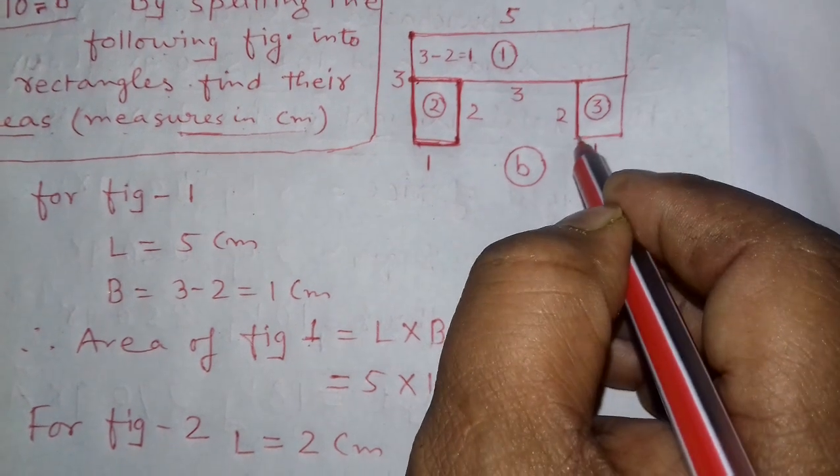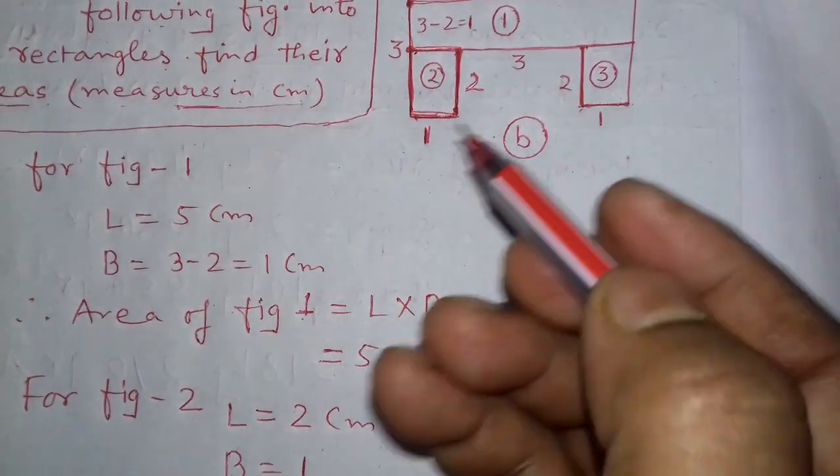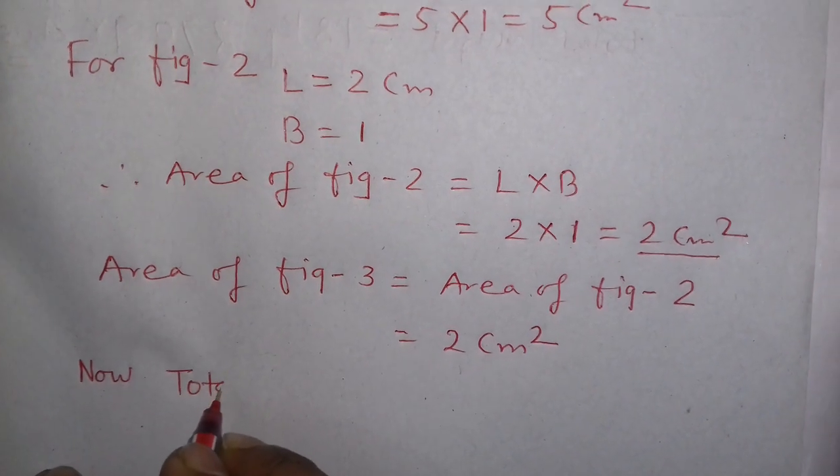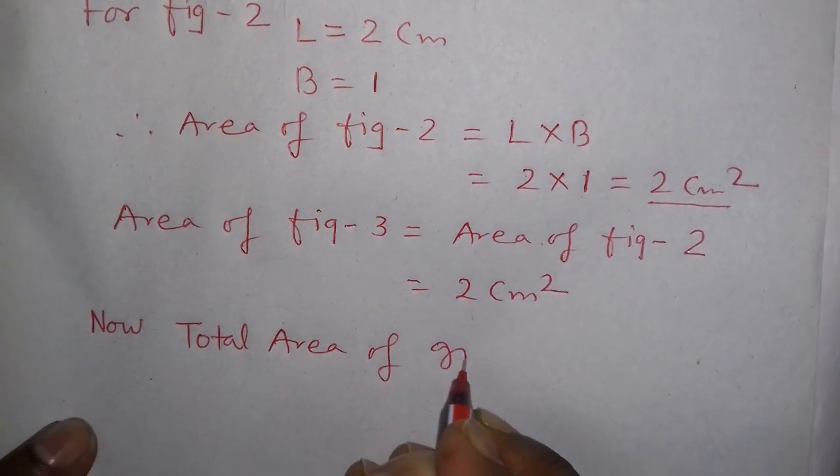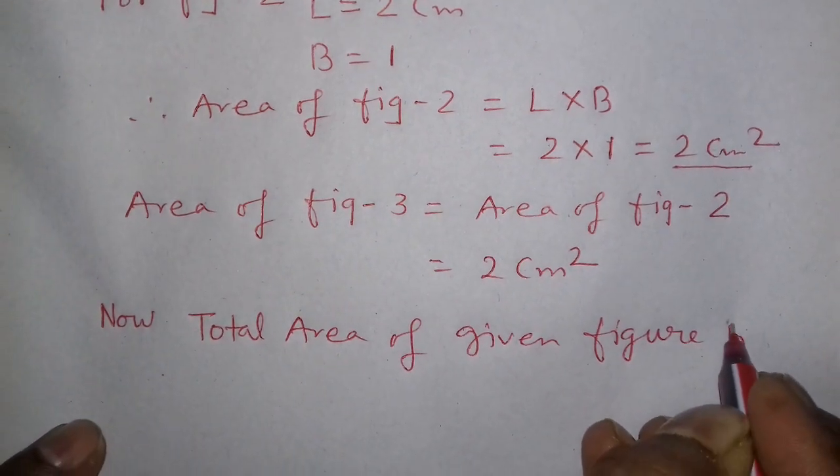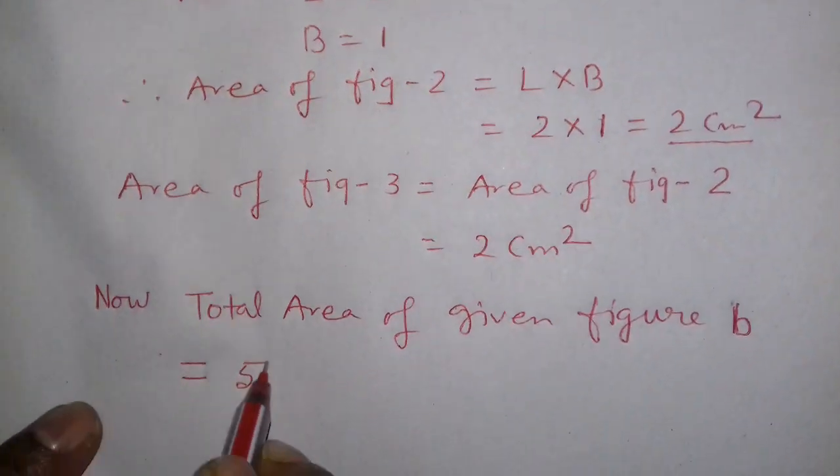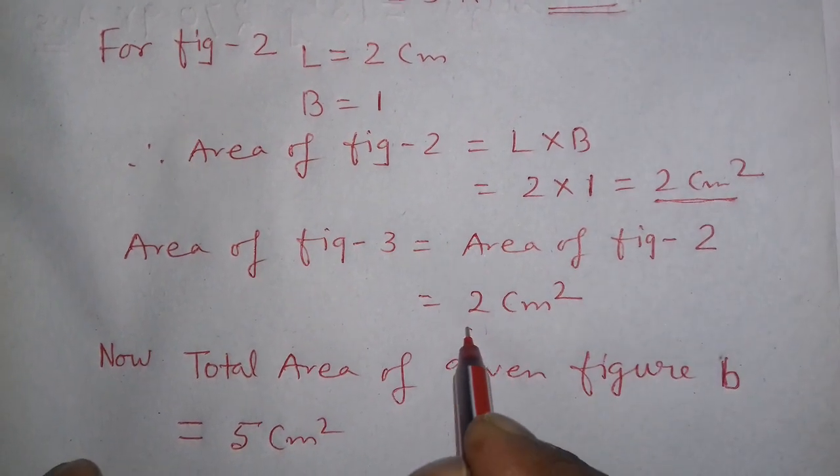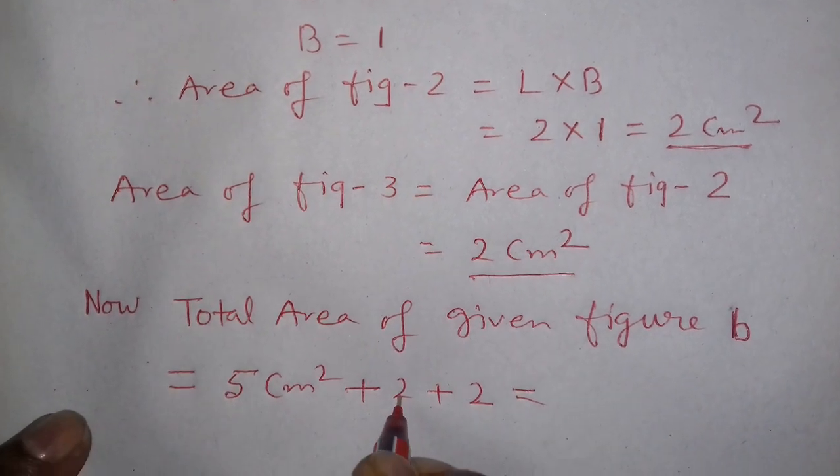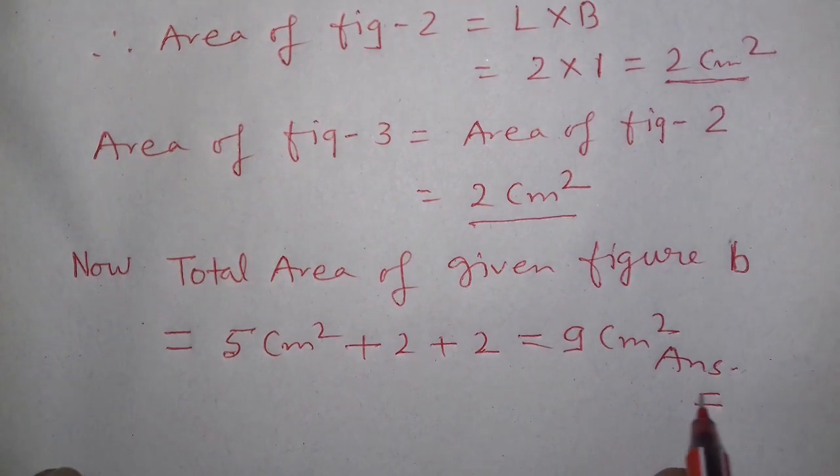So the areas are: Figure 1 equals 5 centimeter square, Figure 2 equals 2 centimeter square, Figure 3 equals 2 centimeter square. Total is 9 centimeter square. This is our answer. Thank you.